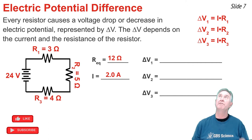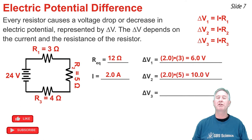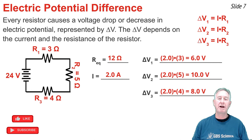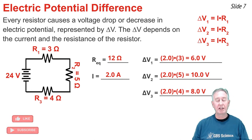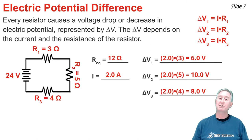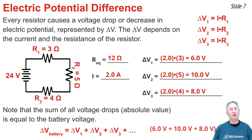With the current known, I can calculate the voltage drops across each resistor. For the first resistor: 3 ohms times 2 amps equals 6 volts. For the second: 5 times 2 equals 10 volts. For the third: 4 times 2 equals 8 volts. Taking these three voltage drop values and adding them together — 6 plus 10 plus 8 — gives 24 volts, and that sum should always equal the voltage of the battery.